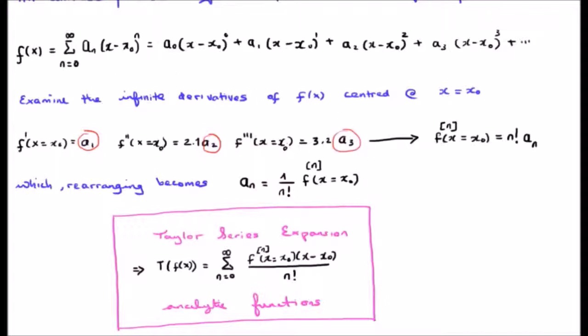Of course, the first coefficient is a sub 0 and you get that by having the zeroth derivative. It seems that if we take the nth derivative of our function and evaluate it at x equals x0, it's equal to n factorial multiplied by the coefficient itself. We may rearrange this to calculate the coefficient a sub n, which is 1 over n factorial times the nth derivative of your function evaluated at x0.